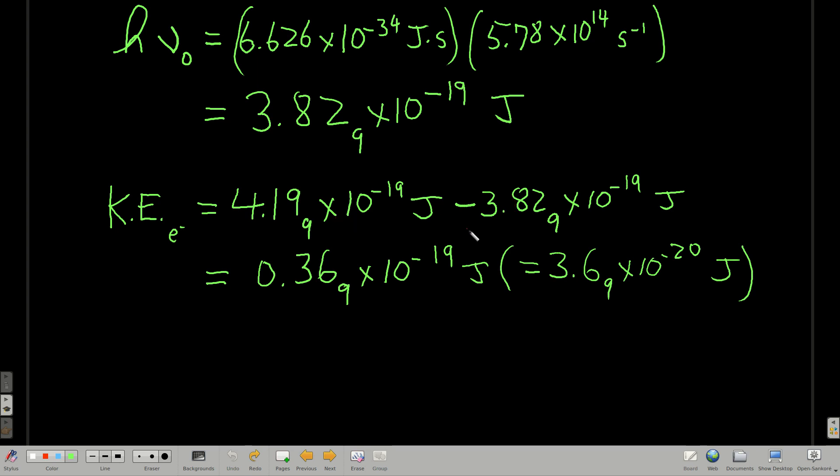Subtracting the two, we get a positive number. So yes, an electron is ejected. Now I'm watching sig figs here, right? So I'm keeping the powers the same and looking at two places past the decimal both to 10 to the minus 19th. So I get to keep two past the decimal to 10 to the minus 19th. But we don't write it this way. We're going to write it 3.69 times 10 to the minus 20th, but only two sig figs because of the subtraction.